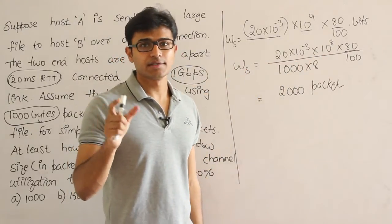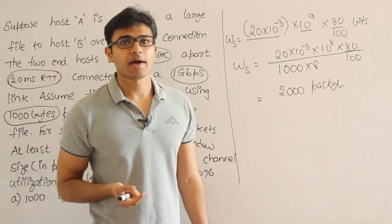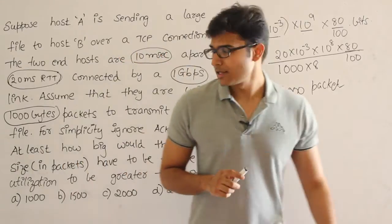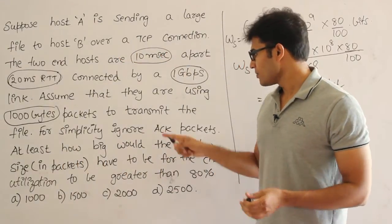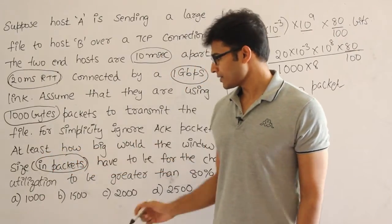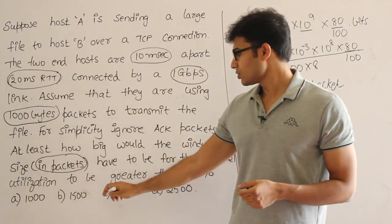And now after getting these many bits as the window size I am dividing the window size with the packet size. Therefore I can get the window in terms of packets. The reason is they have asked us how big would the window size be in packets. So since they have asked us in packets I am doing this. Therefore it has to be greater than 2000 packets.